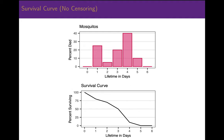If you take the cumulative mortality curve and flip it upside down, you have the percent surviving for each of the passing days. This is a survival curve. In our simple example, none of the mosquitoes can escape our jar. The outcome for every mosquito is known and observed. The only possible outcome is death, and all eventually die.